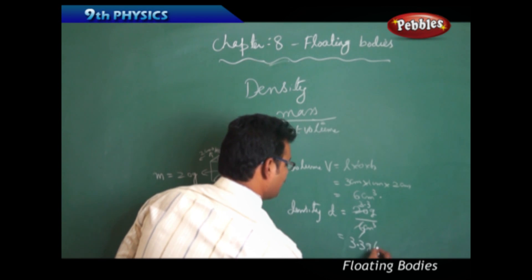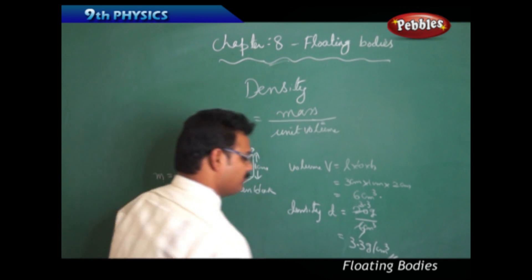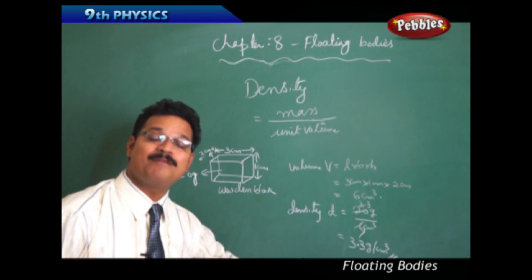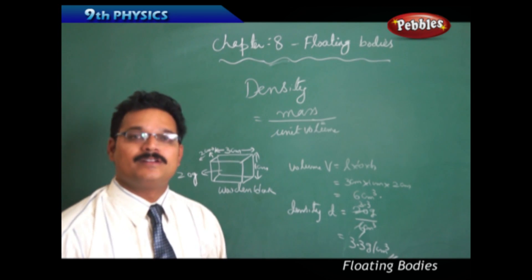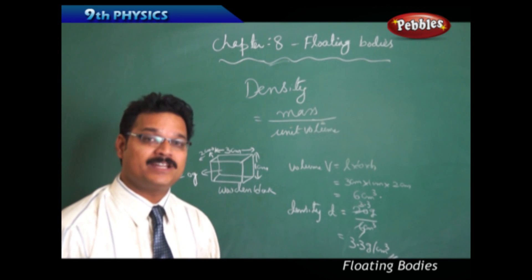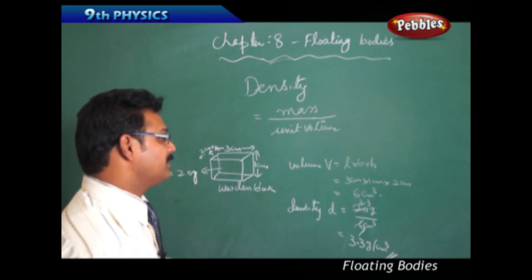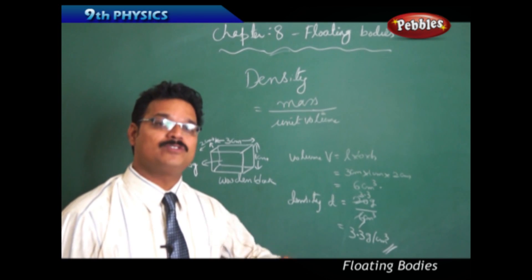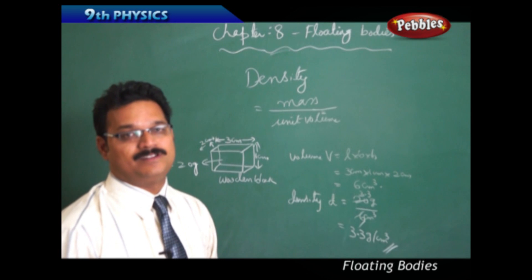So the density of the wooden block is 3.3 gram per centimeter cube. We found the density, but our question of study is whether the body sinks into the water or the body floats on the surface of the water.